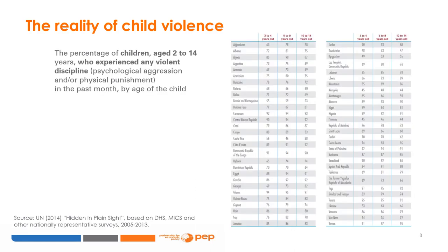Using the same data, this table shows the percentage of children aged 2 to 14 years who experienced any violent discipline by age groups: 2 to 4 years old, 5 to 9 years old, and 10 to 14 years old. The most relevant finding is that prevalence is high in most countries for all three age groups, including 2 to 4 year olds, indicating that in most countries children are exposed to violence since very early in life. In the 10 to 14 year group, although prevalence decreases in some countries, it still remains high in most.